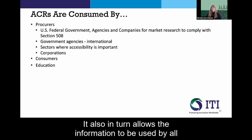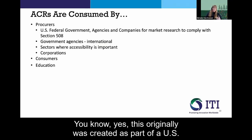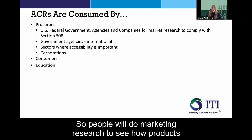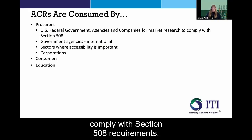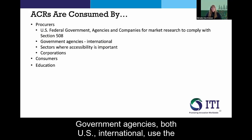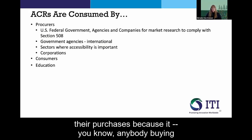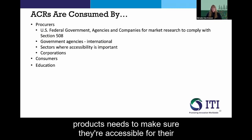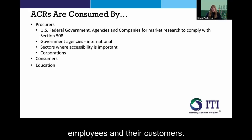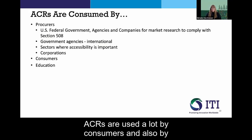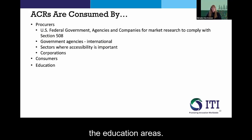The ACR allows information to be used by all sorts of groups. While it was originally created as part of the U.S. federal procurement process, it's used in many more places. People use it for marketing research to see how products comply with Section 508 requirements. Government agencies, both U.S. and international, use it in sectors where accessibility is important. Corporations use it in their purchasing decisions because anyone buying products needs to ensure they're accessible for their employees and customers — the information needs to be available across the board to everyone. ACRs are also used a lot by consumers and in the education sector.